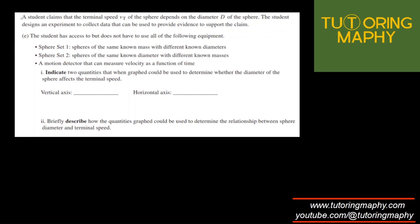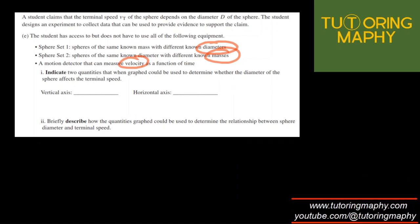The last question for this problem talks about a student claims that the terminal speed is dependent on the diameter of the sphere. And a student designed an experiment to collect data to test whether this is true or not. So he has the following equipment: spheres of the same known mass with different known diameters, so diameter is changing. So what two quantities should he measure? It makes sense that if he's interested to know whether diameter changes the velocity or not, there is no point of changing the masses. Now the question is whether diameter should go on horizontal or vertical axis. Remember that the independent variable goes on the horizontal axis. And this is independent, right? This is in our control. We are changing the diameter. So the diameter goes on the right side and the velocity comes on the left side, the vertical axis.